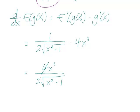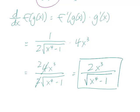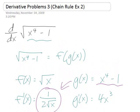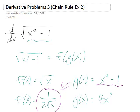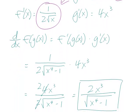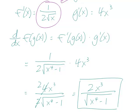4 and 2 cancel out to become 2 on the top, so the answer is 2x cubed over square root of x to the 4th minus 1. And so, the derivative of the original function, which is the square root of x to the 4th minus 1, using the chain rule, would be 2x cubed over square root of x to the 4th minus 1.